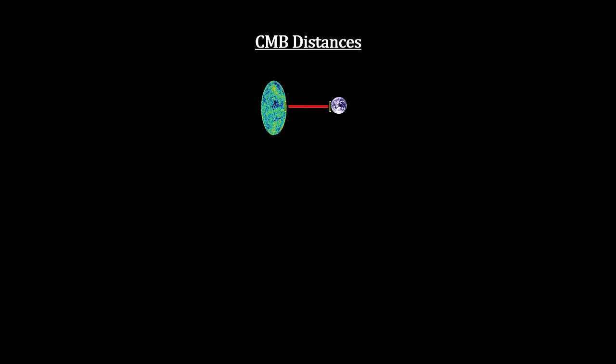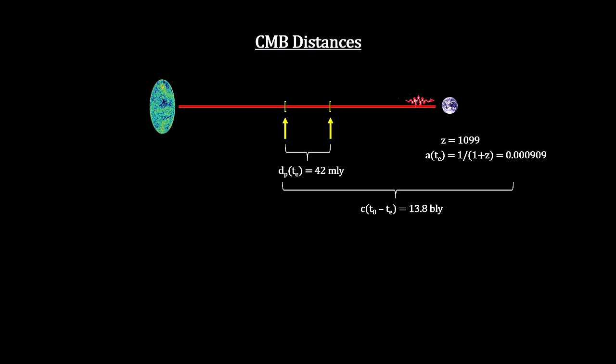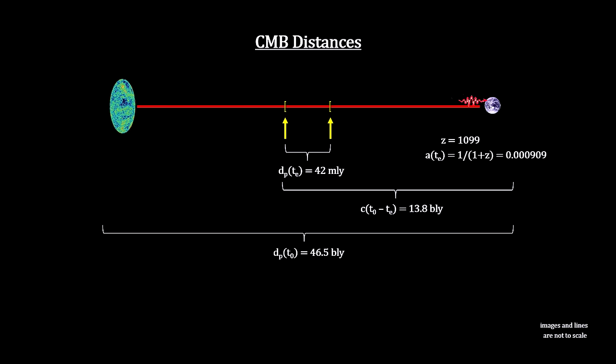The CMB redshift tells us that the light we see now was only 42 million light-years away from our location when it was emitted. It traveled for just under 13.8 billion years to reach us, and its starting location is now 46.5 billion light-years away, making the diameter of the visible universe 93 billion light-years.